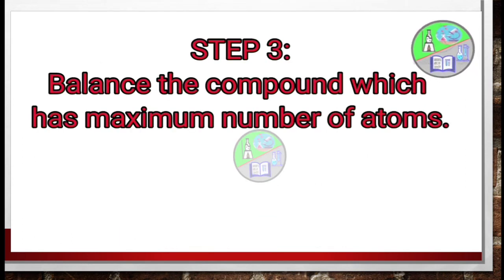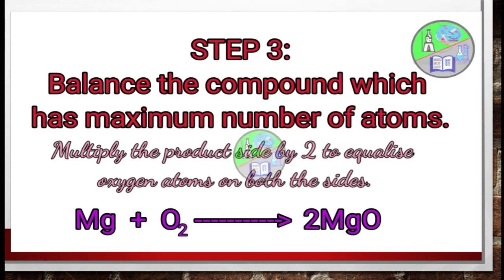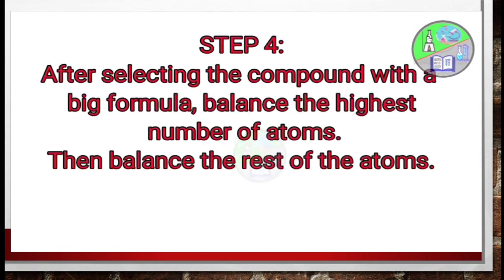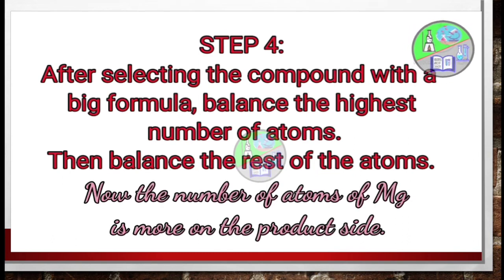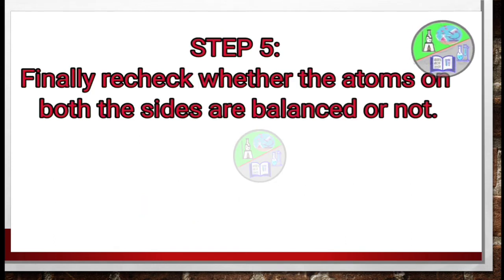Step 3 is balance the compound which has maximum number of atoms. So for this, multiply the product side by 2 to equalize oxygen atoms on both sides. So 2MgO. Fourth step is after selecting the compound with a big formula, balance the highest number of atoms, then balance the rest of the atoms. So now the number of atoms of magnesium is more on the product side. So for this reason, 2 has been multiplied to magnesium on the reactant side.